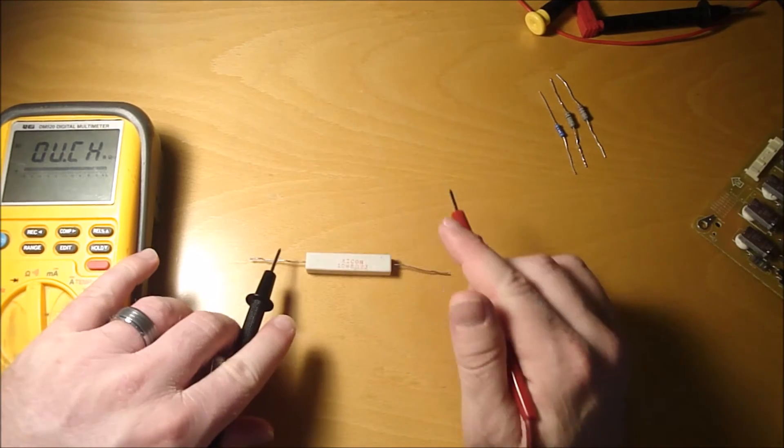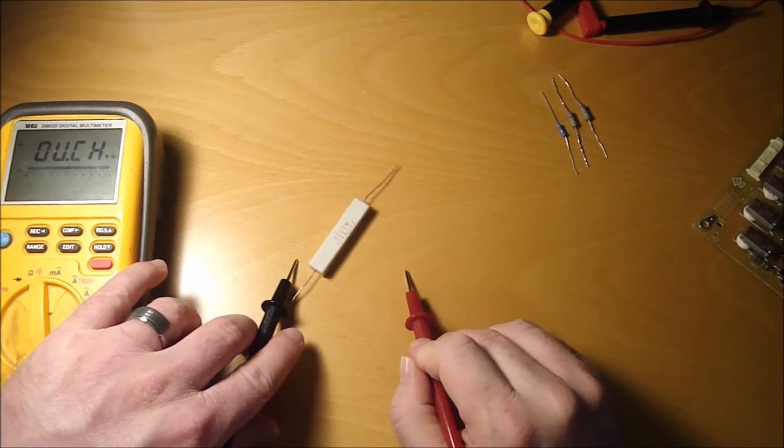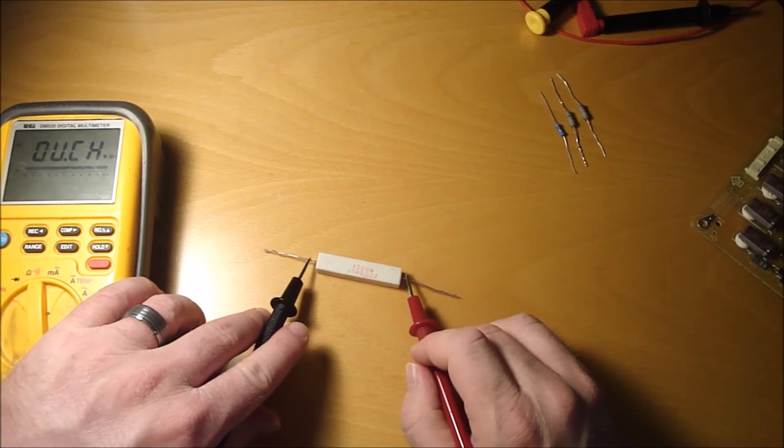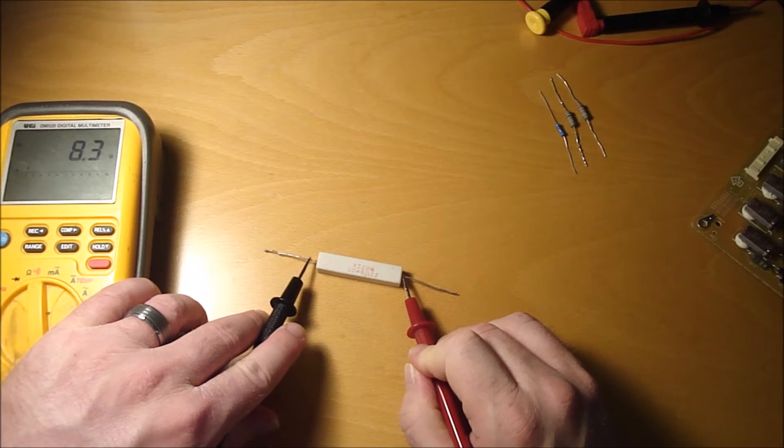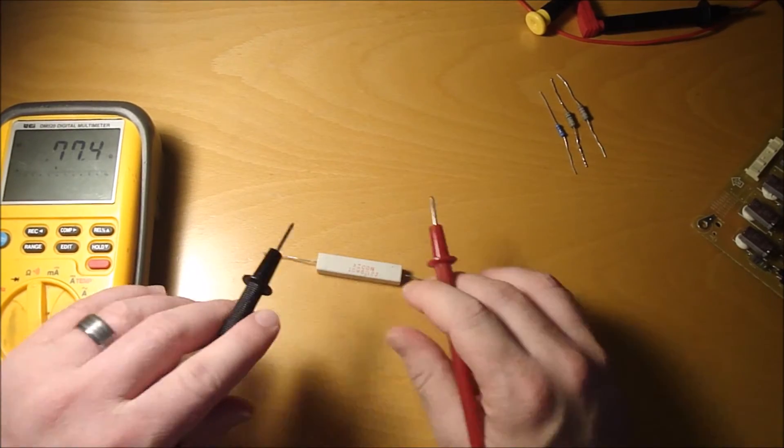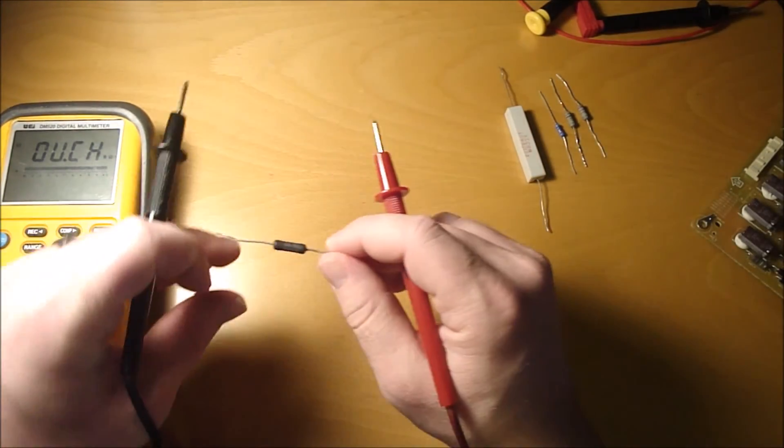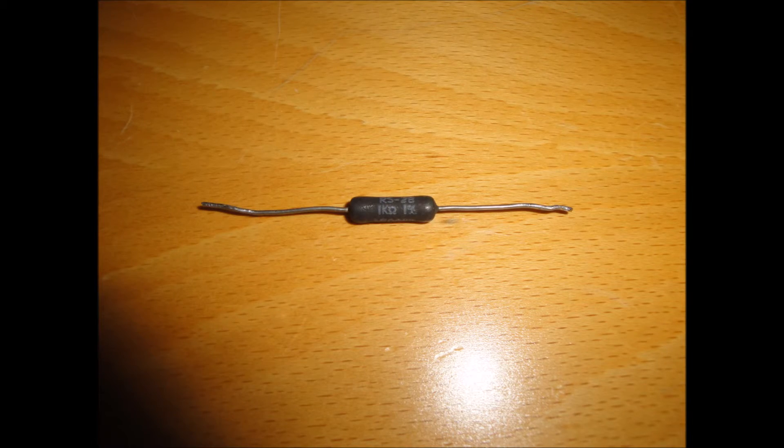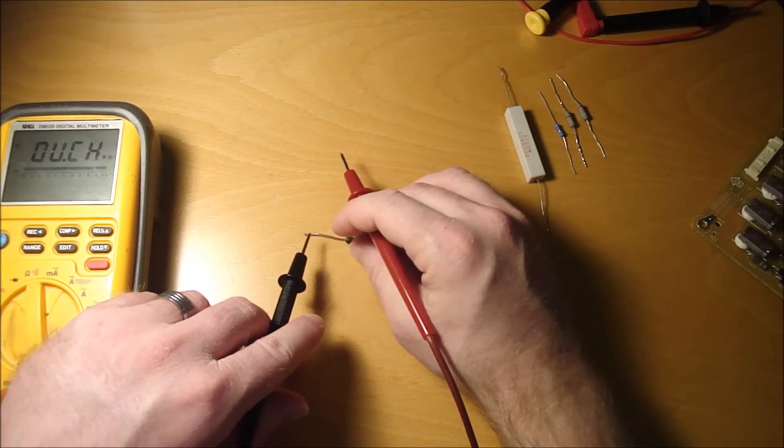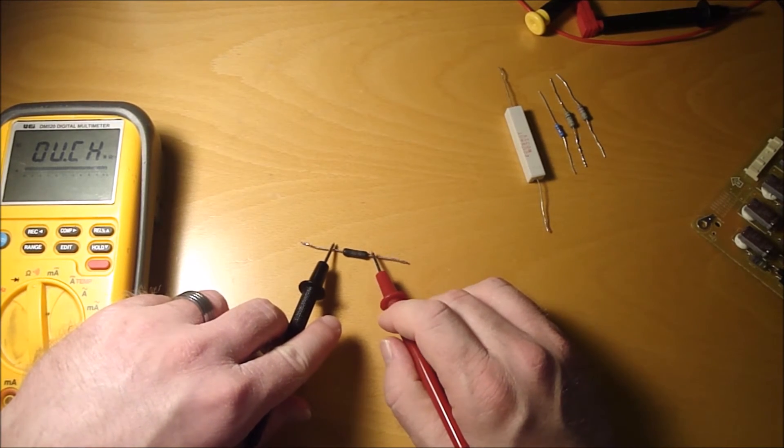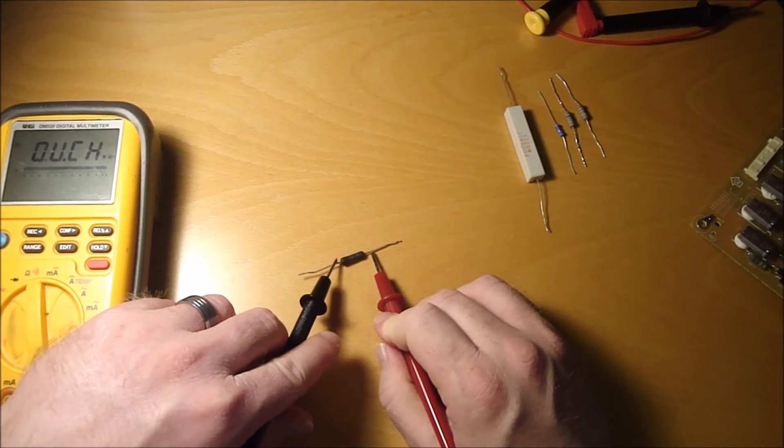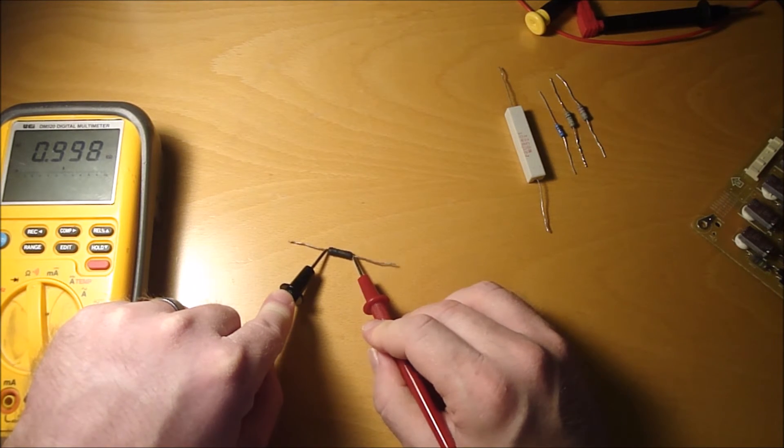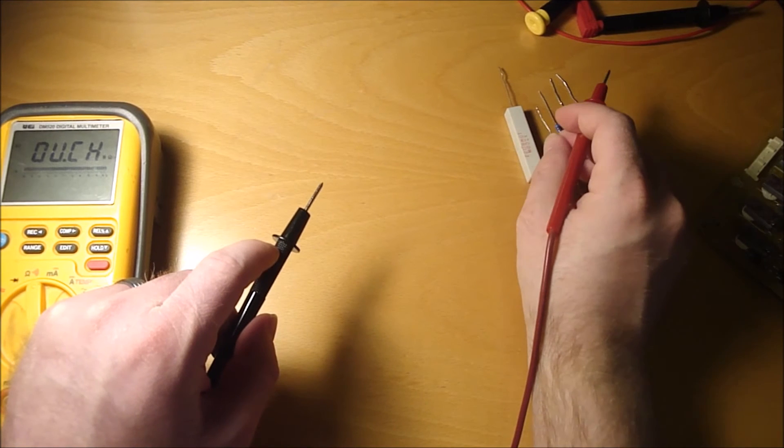Got another one here that just shows the actual value. Says it's eight ohms. 8.3, there you go. This one shows the actual value, says one kilo ohm. It's measuring 0.998 kilo ohms, so pretty close.